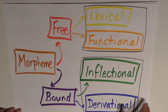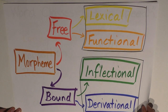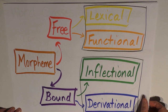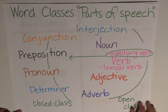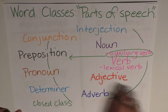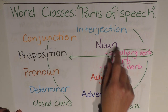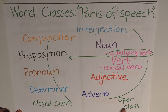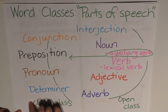Now when we were looking at grammar and word classes, I showed you this diagram here. Do you remember this? Word classes — the parts of speech. I divided them into nine different word classes and then, importantly, I divided those classes into open class words and closed class words.